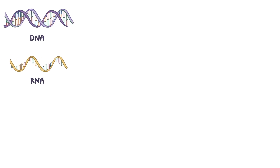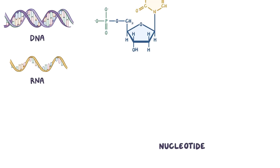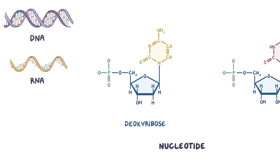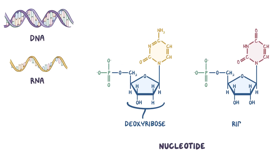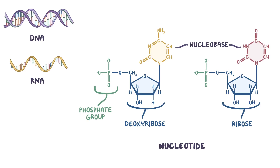Normally, each cell contains both DNA and RNA. Diving deeper, each nucleotide can be broken down into a sugar — a deoxyribose in DNA, or a ribose in RNA — one to three phosphate groups, and a nucleobase, which can be either a pyrimidine or a purine.